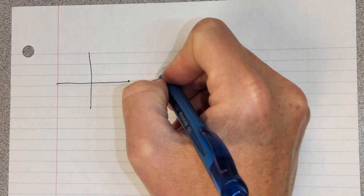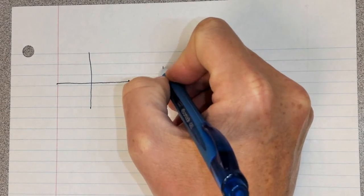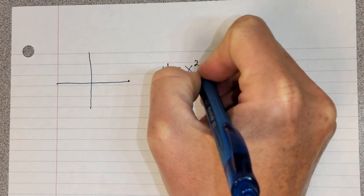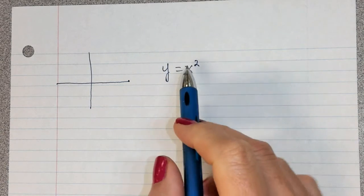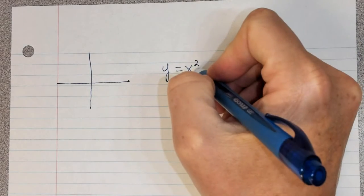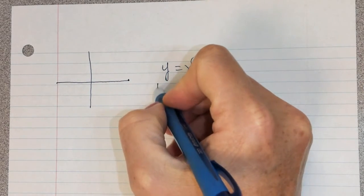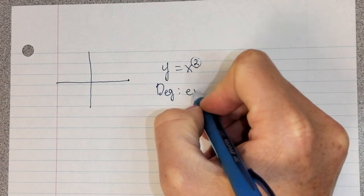One of the most common polynomial functions that we're all used to is y equals x squared. If I want to talk about the degree of this polynomial, I just look at the exponent right there. It's 2.